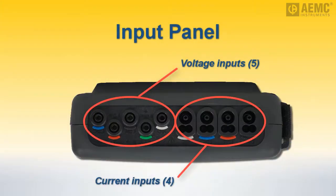On the top of the model 8336 is the input panel, consisting of four current and five voltage input connections for connecting sensors and probes. Each input is labeled to ensure correct hookup to the distribution system under test. In this video, we will connect the model 8336 to the AEMC AC digital signal generator model DSG-8.